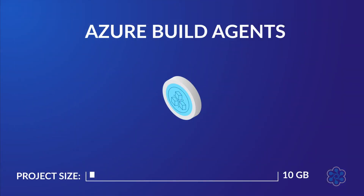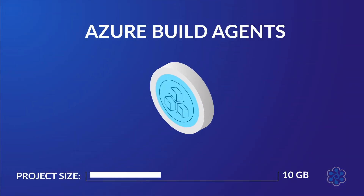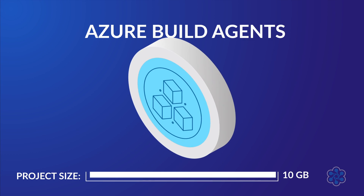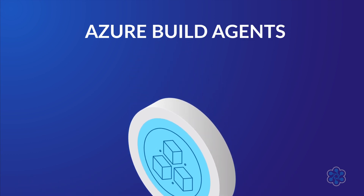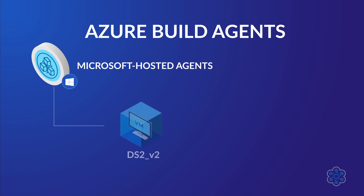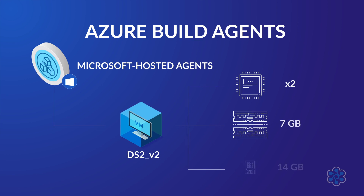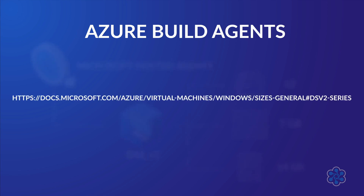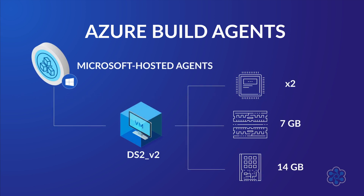The simplest factor is project size. The maximum project size is 10 gigs, including build output. Microsoft hosted agents use a standard DS2V2 virtual machine image. This image has two virtual CPUs, 7 gigs of RAM, and 14 gigs of temporary SSD storage — just an average machine in most respects. If you need more information about this image, you can find it at the provided URL. If you need more powerful hardware than this, then self-hosted is likely the way to go.